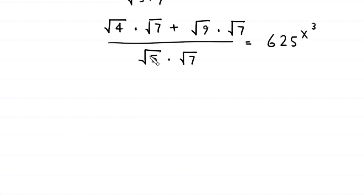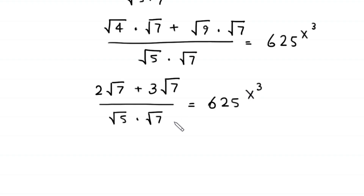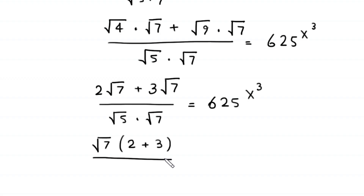Next, root 4 becomes 2 times root 7, plus root 9 becomes 3 times root 7, all divided by root 5 times root 7, equal to 625 to the power x cubed. From the numerator, we can factor out root 7, leaving us with root 7 times (2 plus 3), divided by root 5 times root 7, equal to 625 to the power x cubed.